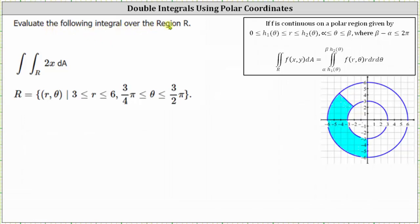We're asked to evaluate the following integral over the region R. We have a double integral over the region R of 2X dA, where the region R is given using polar coordinates, where r is greater than or equal to 3 and less than or equal to 6, and the angle theta is greater than or equal to 3/4 pi and less than or equal to 3/2 pi.